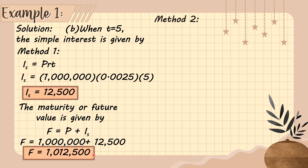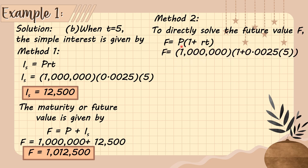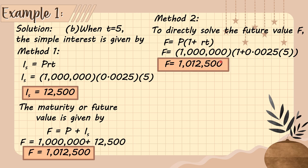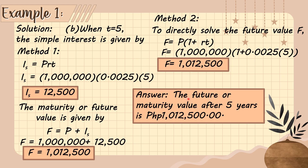When we solve that using method two, using the formula F equals P times 1 plus rate times time: 1,000,000 times 1 plus 0.0025 times 5, that gives us 1,012,500. This is the same result as method one. So the future or maturity value after five years is P1,012,500.